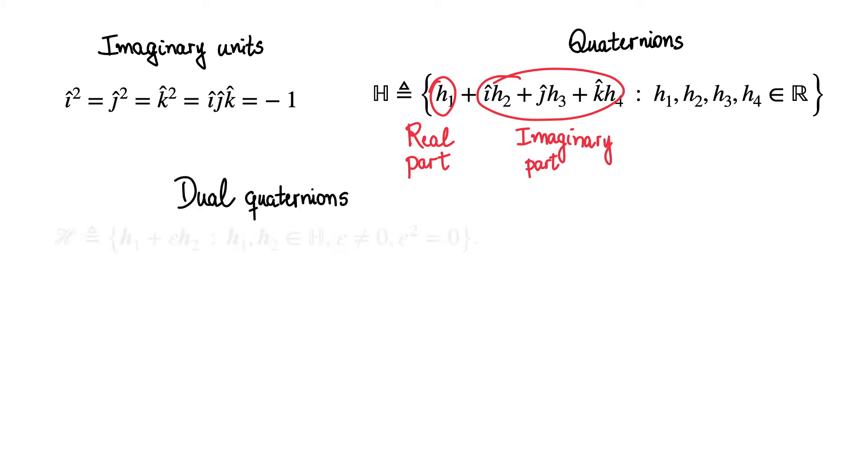Dual quaternion algebra has one more special unit, often called dual unit and denoted by epsilon, which is different from zero, but epsilon squared equals zero. Dual quaternions are composed of two quaternions. The one that is not multiplied by the dual unit is called the primary part, and the one multiplied by the dual unit is called the dual part.